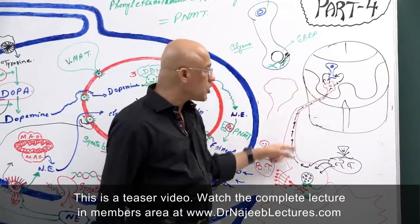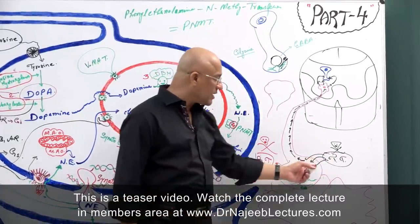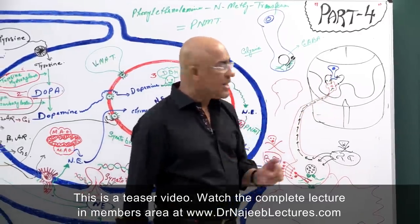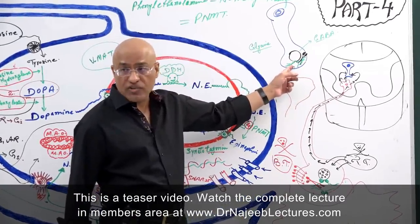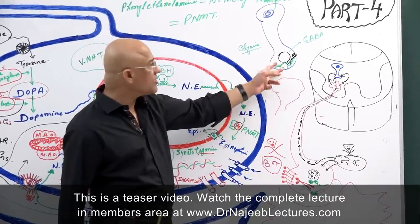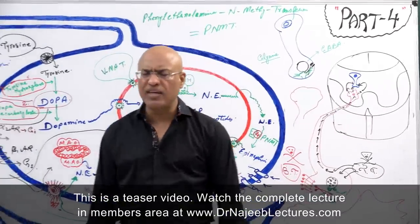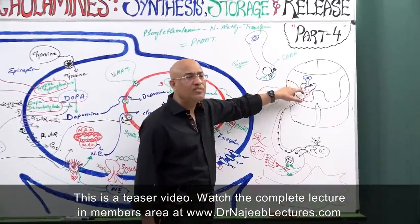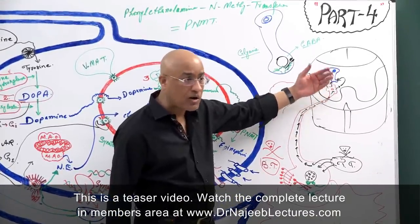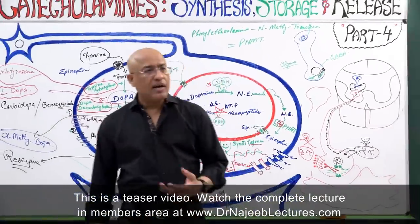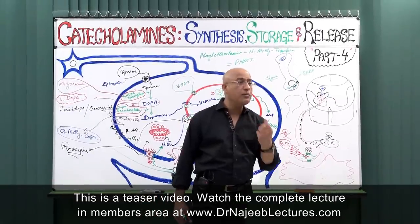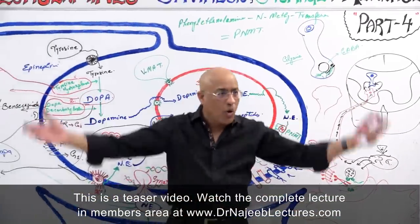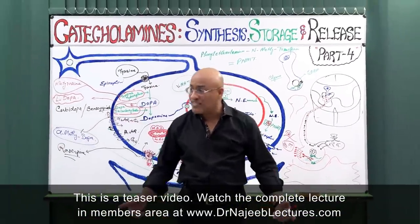Alpha motor neurons take up tetanus toxin, transport it to the central nervous system, and present it to GABAergic or glycinergic nerve endings. The toxin destroys the SNARE proteins inside these inhibitory cells, so they lose the machinery for exocytosis and fail to release GABA or glycine. In the spinal cord and brainstem, tetanus toxin causes failure of inhibitory neuron firing, freeing alpha motor neurons to over-fire and produce spastic paralysis.